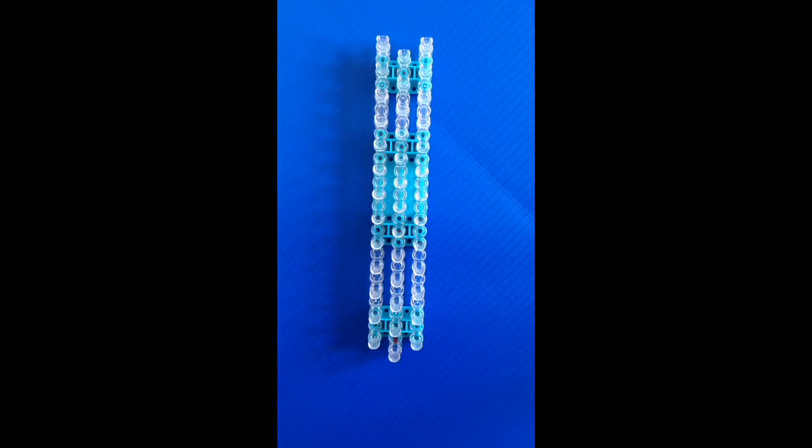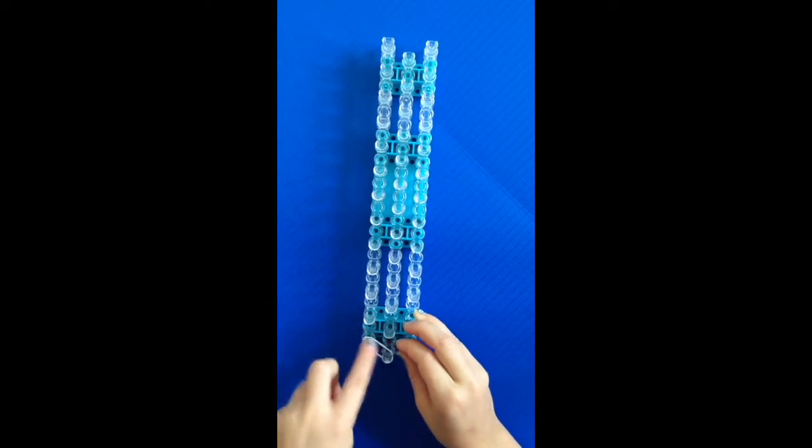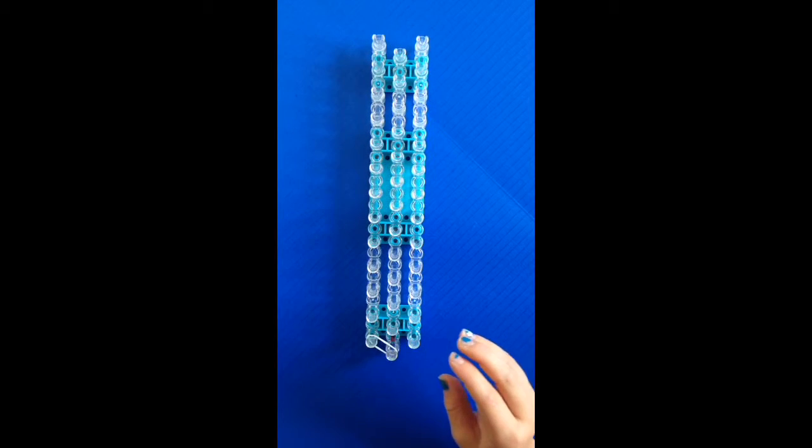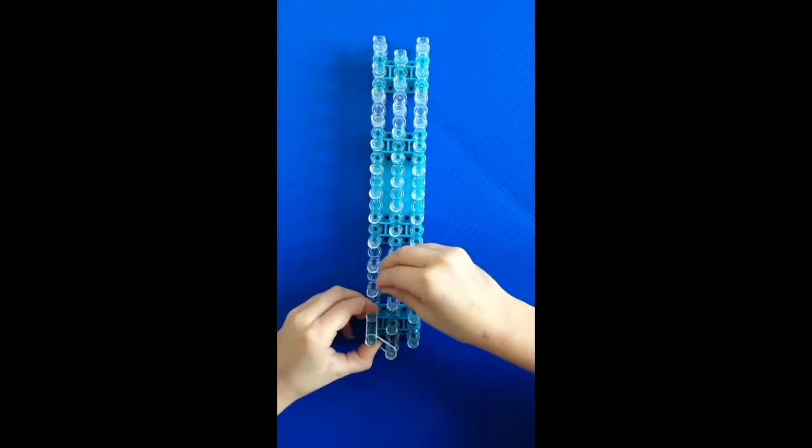To start, your loom needs to be in this configuration with the arrows pointing away from you. So just take your border color and go out like that, and then go all the way up your loom with single rubber bands.